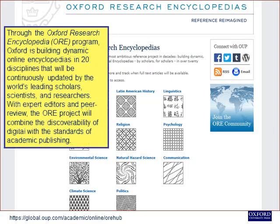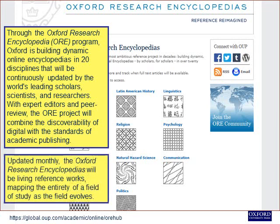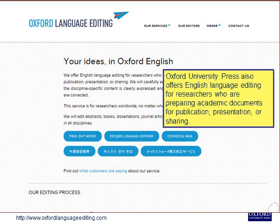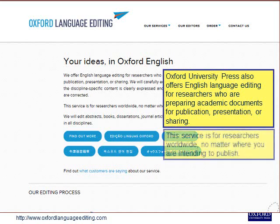Through the Oxford Research Encyclopaedia programme, Oxford is building dynamic online encyclopaedias in 20 disciplines that will be continuously updated by the world's leading scholars, scientists and researchers. With expert editors and peer review, the ORE project will combine the discoverability of digital with the standards of academic publishing. Updated monthly, the Oxford Research Encyclopaedias will be living reference works, mapping the entirety of a field of study as the field evolves. Oxford University Press also offers English language editing for researchers worldwide who are preparing academic documents for publication, presentation or sharing.